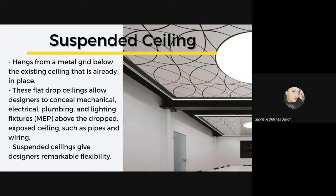Next we have the suspended ceiling. A suspended ceiling, sometimes referred to as a drop ceiling, hangs from a metal grid below the existing ceiling already in place. Commonly used with noise-regulating acoustic ceiling tiles, these drop ceilings allow designers to conceal mechanical, electrical, plumbing, and lighting fixtures such as pipes and wiring. Most commonly used in commercial buildings, offices, and retail spaces, most wood ceilings are suspended using standard commercial T-bar grids and are a cost-effective option.